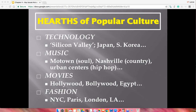Looking at the hearths of popular culture: for technology, think Silicon Valley — San Francisco, San Jose — plus Japan and South Korea. For music, Nashville is the hub for country, Motown is Detroit, and urban centers like L.A., New York City, and Atlanta for hip-hop. For movies, Hollywood in Los Angeles is the big hearth, along with Bollywood in India and Egypt as a hub for the Arab world. For fashion, think New York City, Paris, London, and L.A. — the latest fashion trends usually start in New York City and Paris, then trickle down to the rest of Europe and the United States.